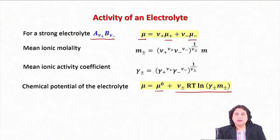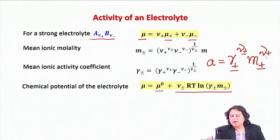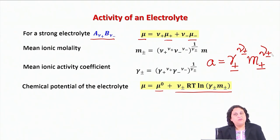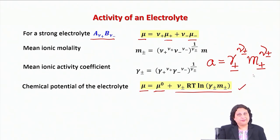What is the definition of activity in this case? The activity is γ±^(ν±) · m±^(ν±). The beauty of the thermodynamic treatment is that all we had to do was look at what μ is: the standard state value plus RT·ln(a). By looking at what we have derived, we can easily identify what the activity of the electrolyte is.